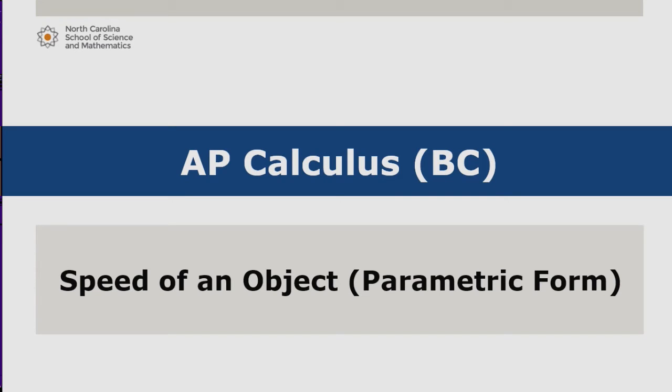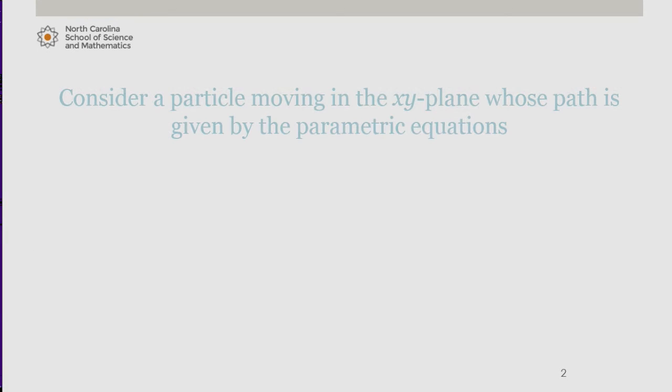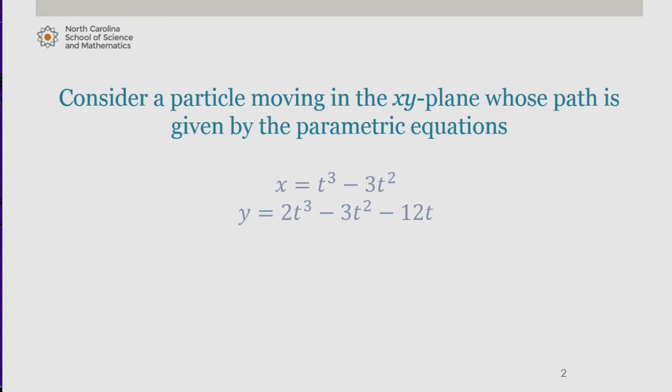In this video, we'll look at another example involving the speed of an object whose path is described parametrically. Consider a particle moving in the xy-plane whose path is given by the parametric equations x = t³ - 3t² and y = 2t³ - 3t² - 12t.